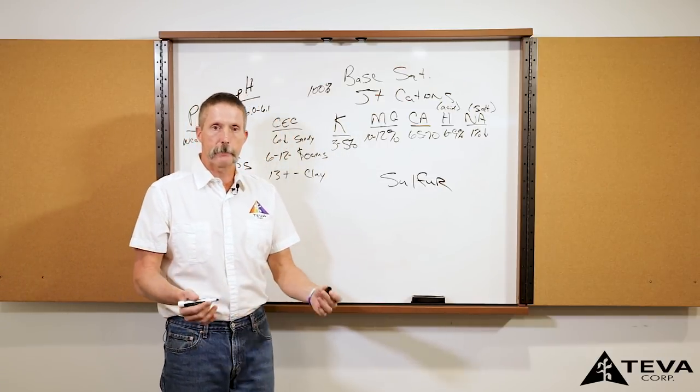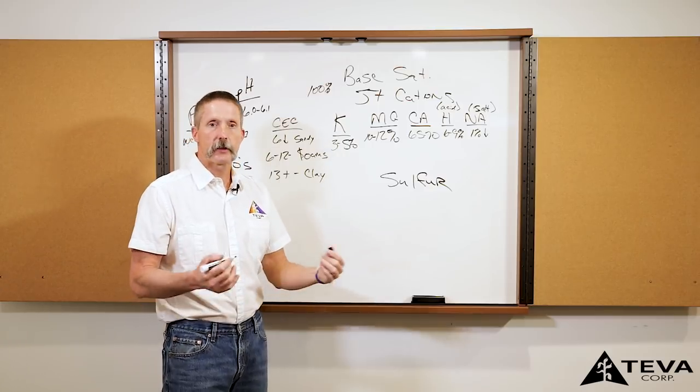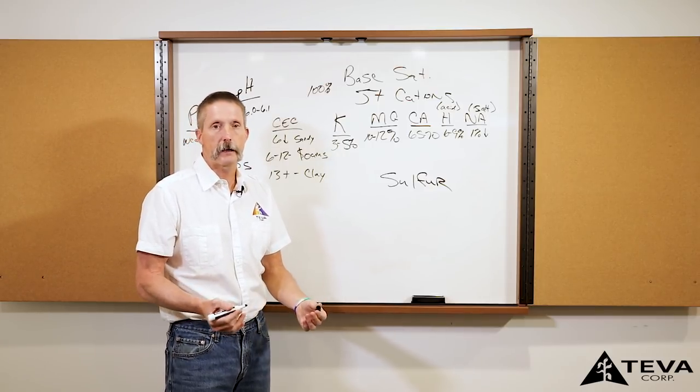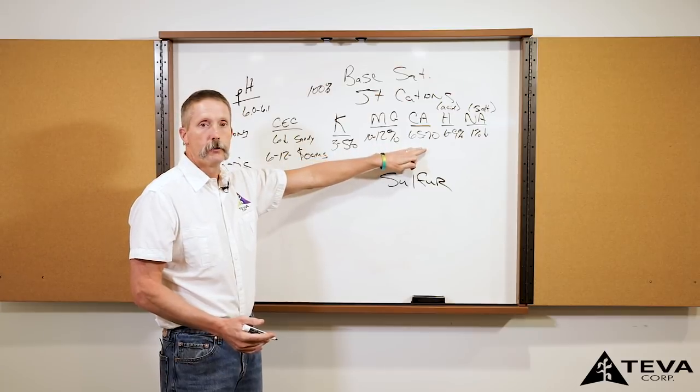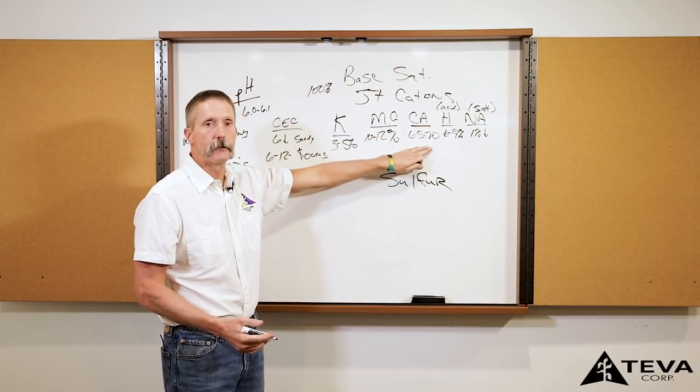There's different kinds of sulfur that we can use. There's elemental sulfur, there's gypsum, there's ammonium thiosulfate. What we recommend depends upon where you're at on your calcium levels in the soil.